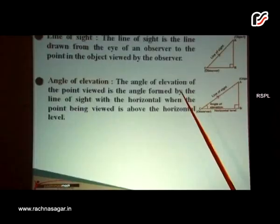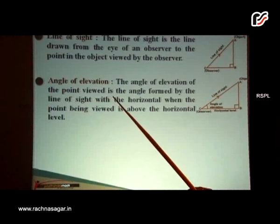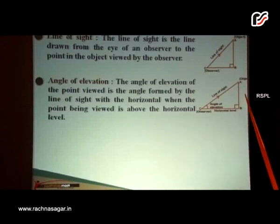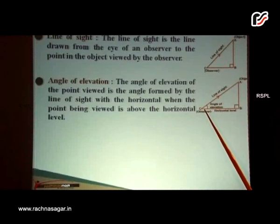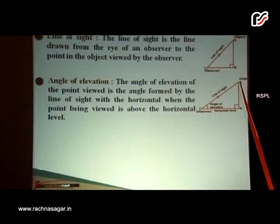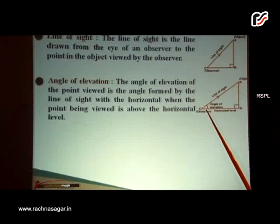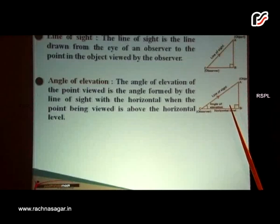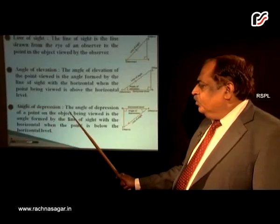The angle of elevation of the point viewed is the angle formed by the line of sight with the horizontal when the point being viewed is above the horizontal level. Here, A is the object to be viewed and C is the observer. The line through the observer is the horizontal level, that is BC, and CA is the line of sight. The angle between the line of sight CA and the horizontal CB is the angle of elevation. So in this case, angle ACB is known as the angle of elevation.